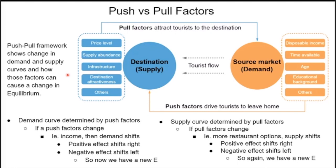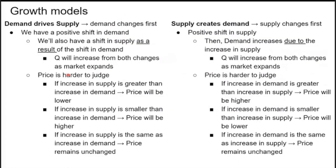The push-and-pull framework shows how changes in demand and supply curves cause a change in equilibrium. The demand curve is determined by push factors: if a push factor like income changes, the demand shifts — positive effects shift right, negative shift left, creating a new equilibrium point. The supply curve is determined by pull factors: if pull factors change, for example more restaurants open, supply increases, shifts right, and there's a new equilibrium point.